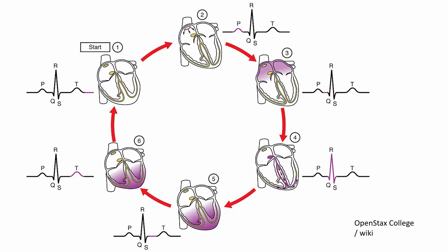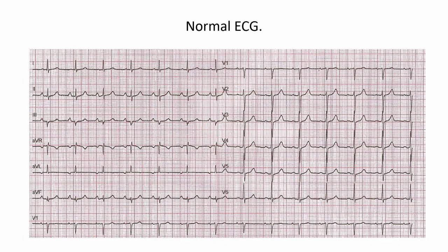To recap: starting from nothing, the SA node fires, spreads over the atrium — you get the P wave — then there's contraction, delay at the AV node, then it spreads very rapidly through the ventricle — QRS — relaxation to the T wave, and then a period of delay before repeat. That gives rise to a normal ECG, which many of you will have seen in hospital. ECGs show a huge amount, but for purposes of this talk I'm just going to be discussing rhythm.